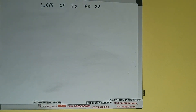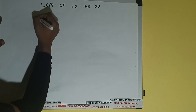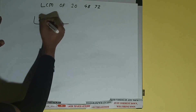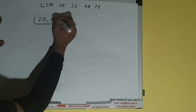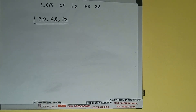Hello friends, in this video I'll be helping you with the LCM of the numbers 20, 48, and 72. So let's start. First of all, we need to write all three numbers like this: 20, 48, 72. The next thing we need to do is start with the lowest prime number, 2.